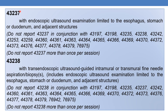The next CPT is 43237. It deals with esophagogastroduodenoscopy, flexible, transoral, with endoscopic ultrasound examination, limited to the esophagus, stomach, or duodenum and adjacent structures. An important point: do not report 43237 more than once per session, as it is an endoscopic ultrasound examination.